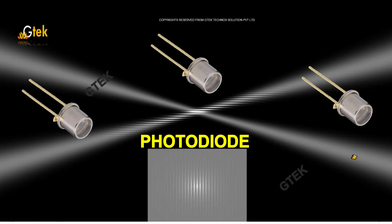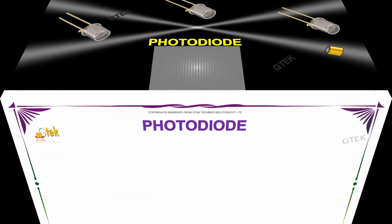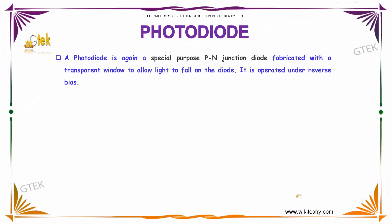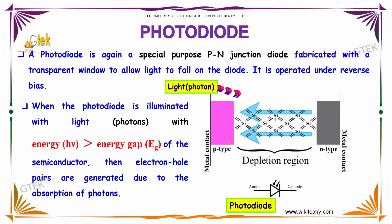Here is the photodiode. We are going to talk about photodiodes. What is it? A photodiode is a special purpose PN junction diode fabricated with a transparent window to allow light to fall on the diode.